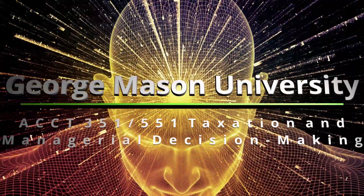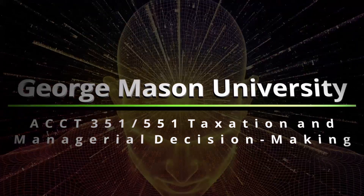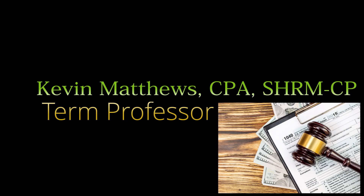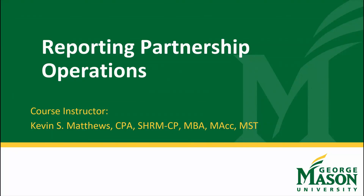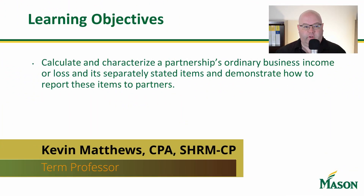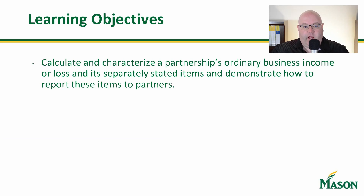This is Chapter 20, Video 4. In this class we're going to calculate and characterize a partner's ordinary income and loss, and separately stated items, and determine how these items are reported to partners.